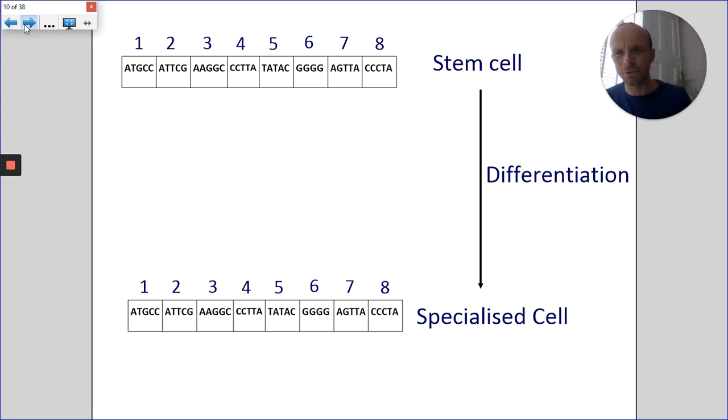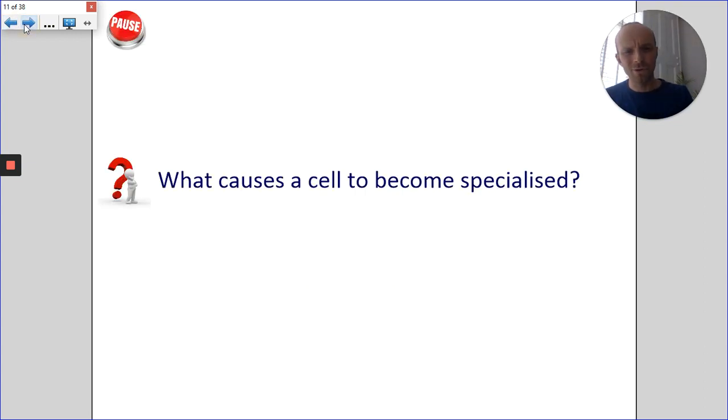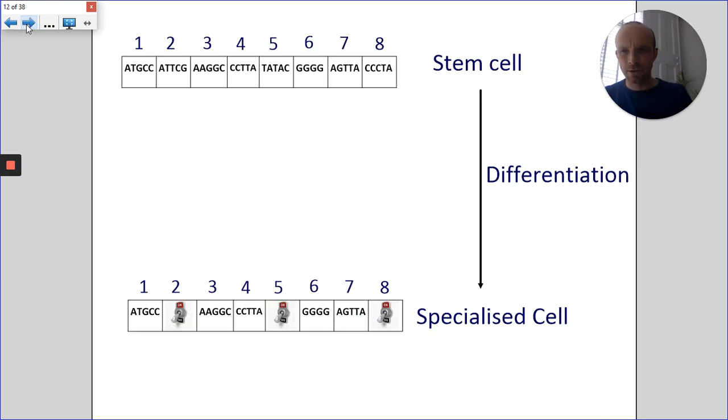So that leads to the question: what causes a cell then to become specialized? How is a cell that is specialized different genetically to a cell that's unspecialized, a stem cell?